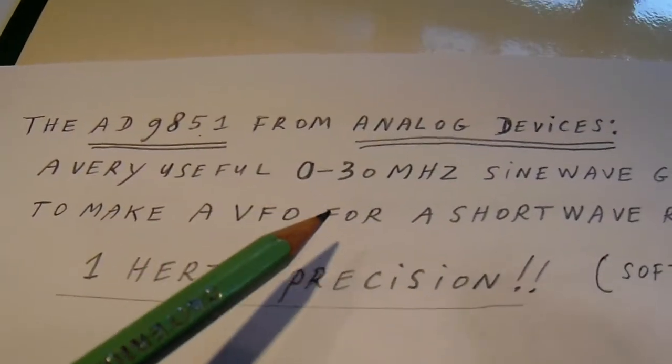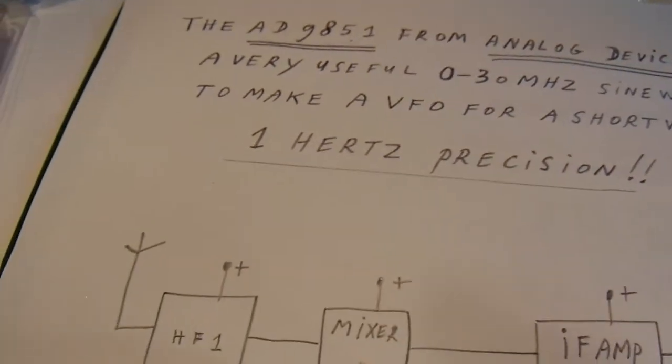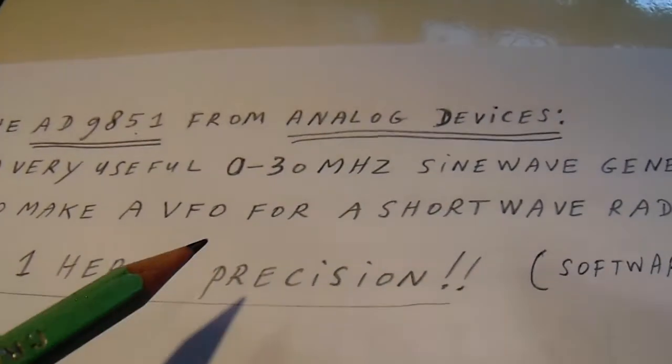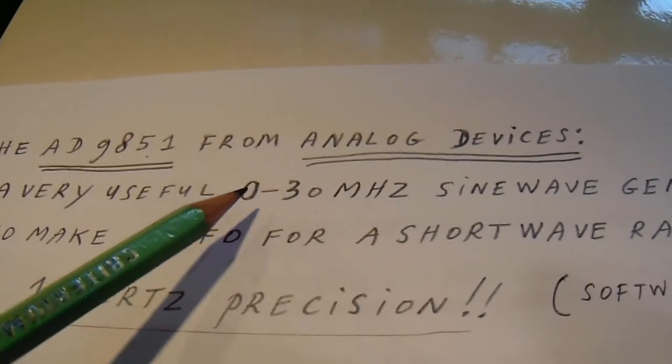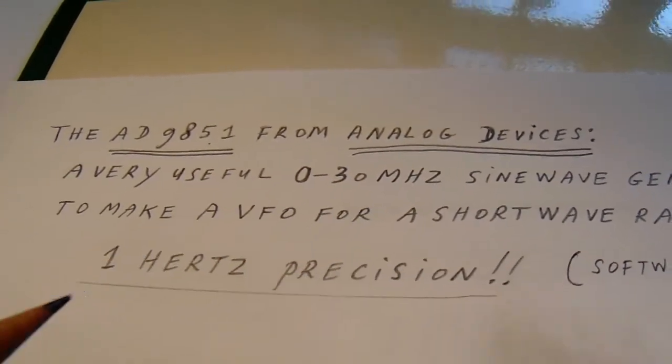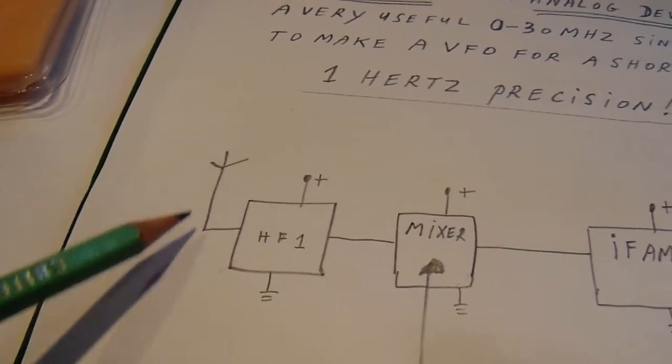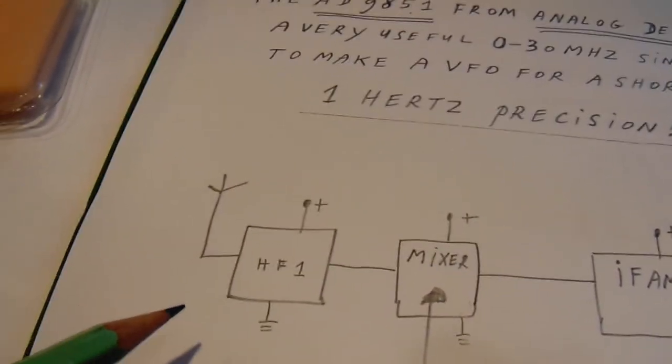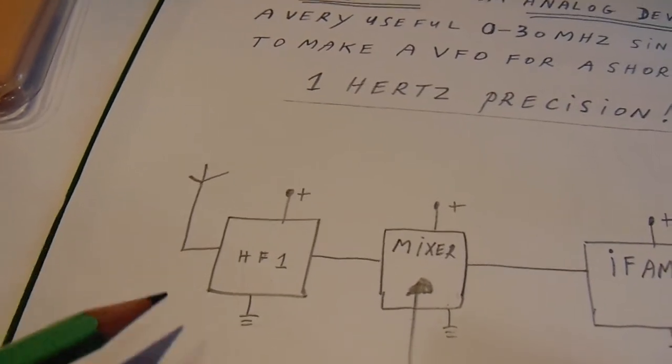Of course for the lower bands you still have here a conventional coil, but from approximately 2 up to 30 megahertz, the coils here in this stage, the high frequency stage, don't have to be too big.